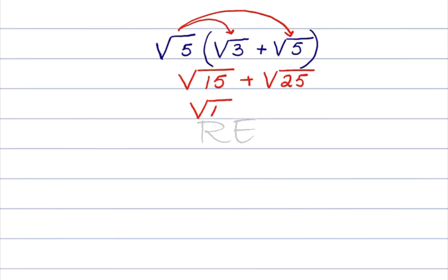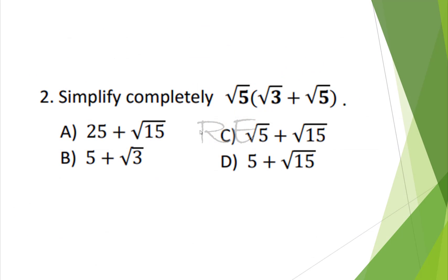Square root of 15 is already in simplified form — 3 and 15 share no perfect square factor. And square root of 25 is 5. We rewrite it as 5 plus square root of 15, and the correct answer is C.